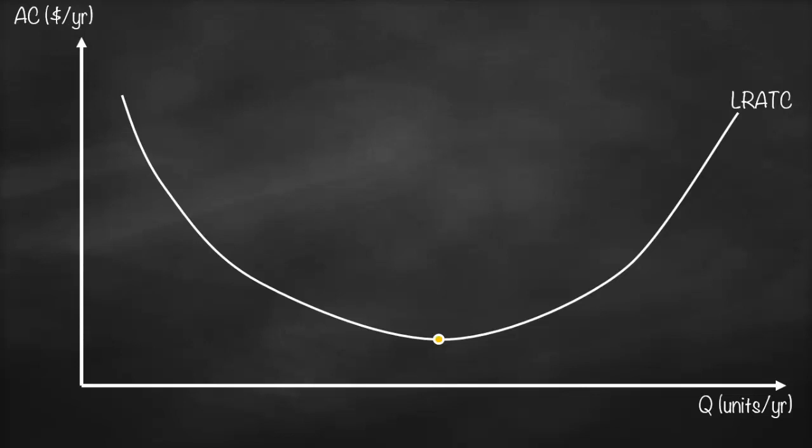Here we have the minimum long-run average total cost. At this point we'll have our Q star, which means this will be our optimum quantity which we call the minimum efficient scale, or MES.